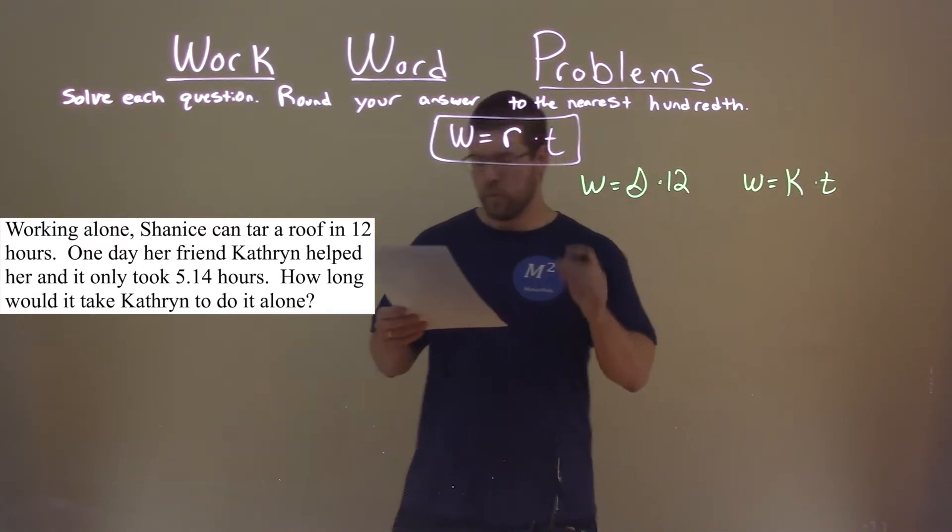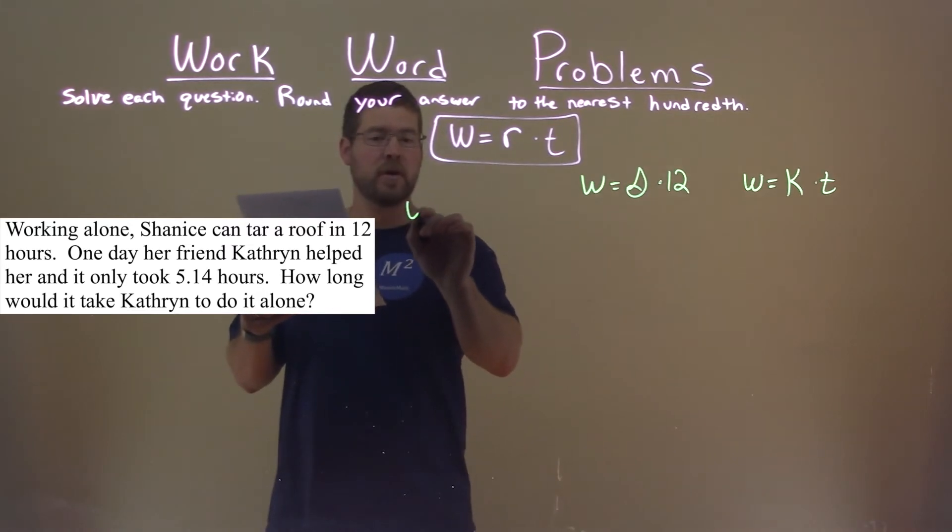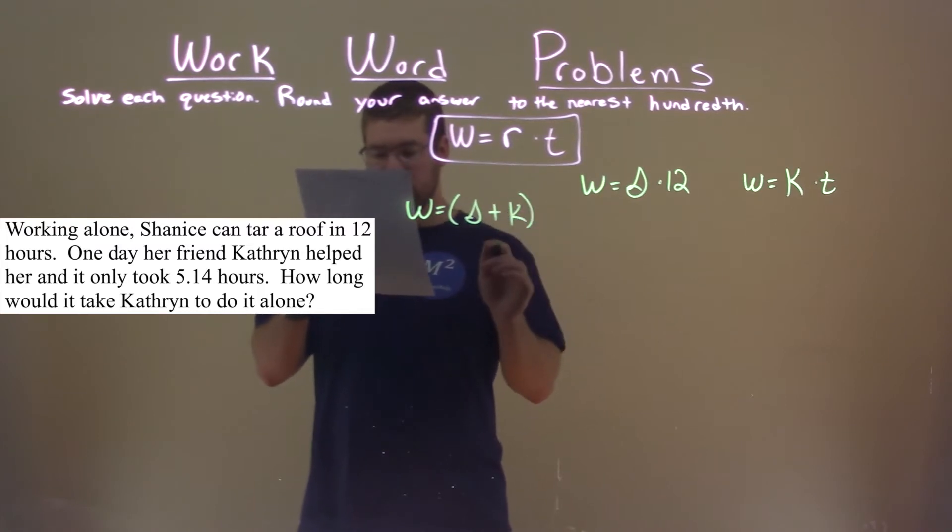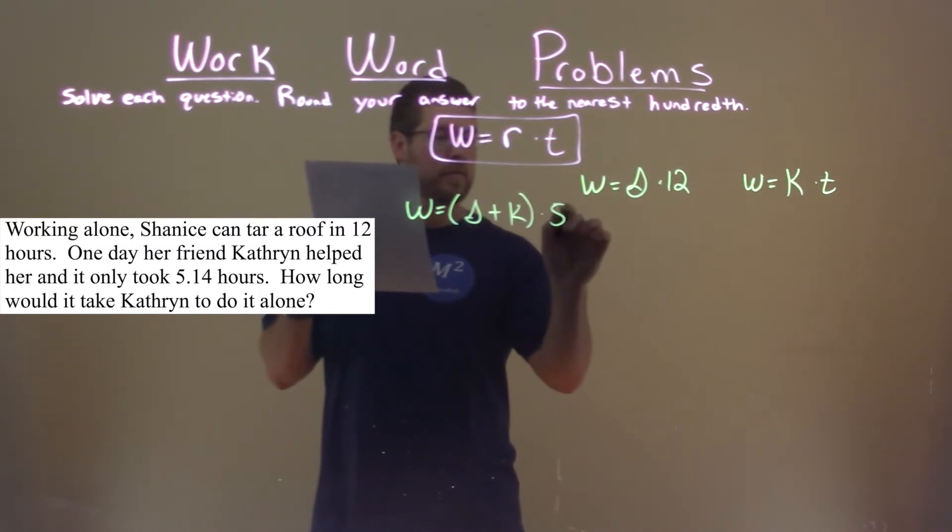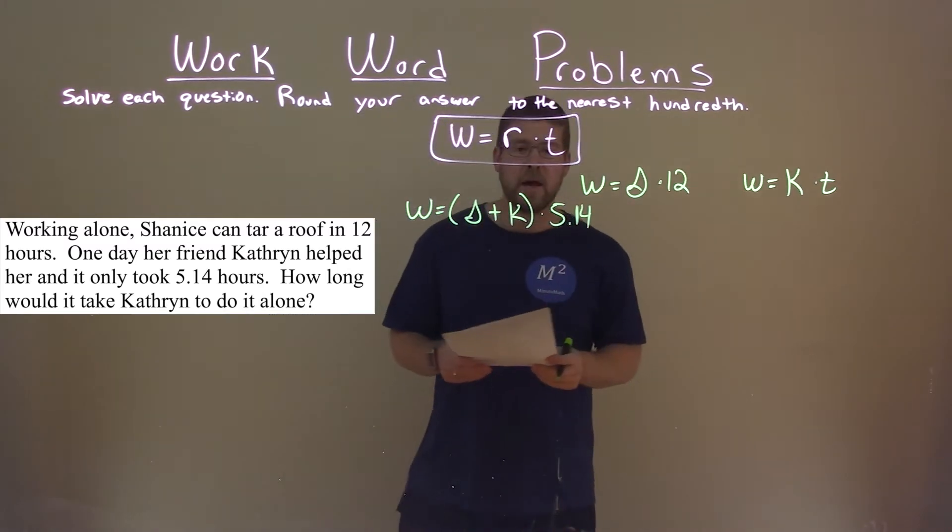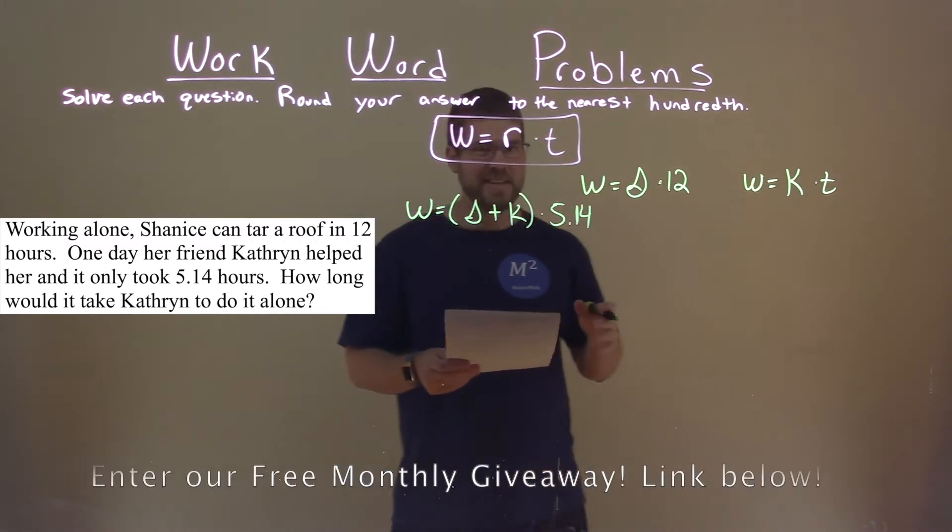What we do know is when they work together, doing the same job, we have s plus k, took them a total of 5.14 hours. And we actually have now the three equations we need to solve this.